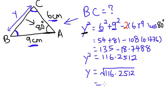So y equals to square root 116.2512. And what do you get from there? You get around 10.7819, or if you round it up, you get around 10.782 cm. So this is how we apply it.